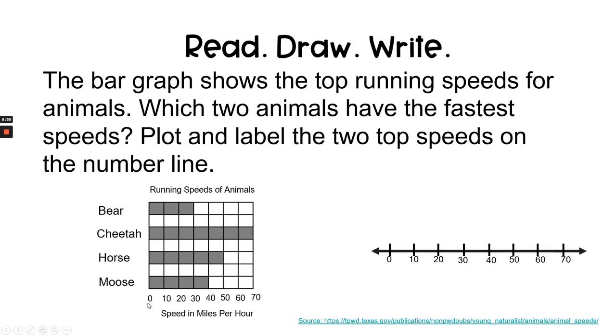The scale goes from 0 to 70, 70 being the highest number. So, I want to look for the two animals that have the highest number. And I can do that by looking at which one goes farthest along on the number line. Obviously, cheetah has the top speed. And the next longest line that goes farthest right is horse. Horse travels at 50 miles per hour. So, now I can plot those numbers on the number line.